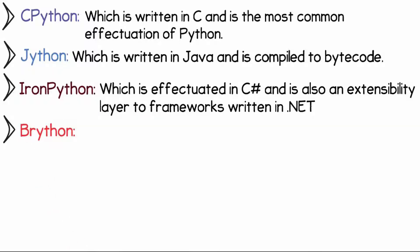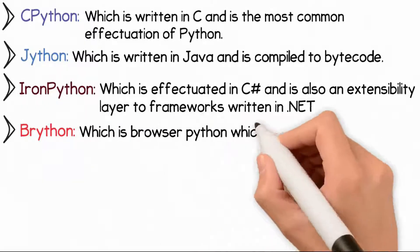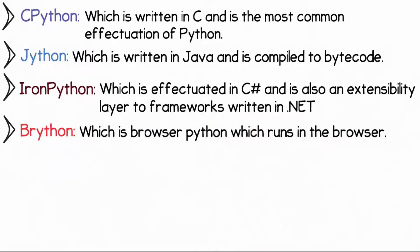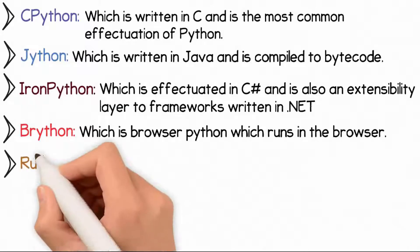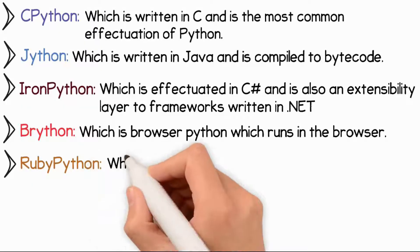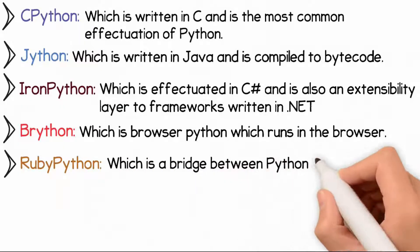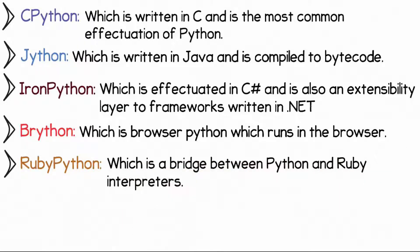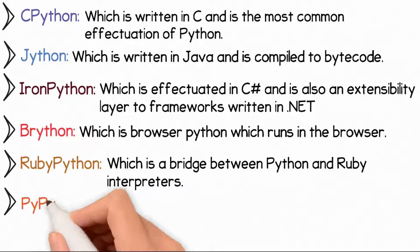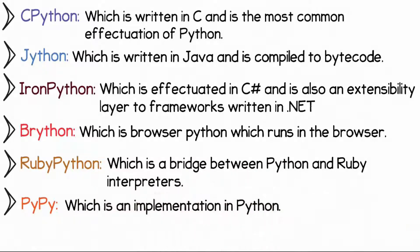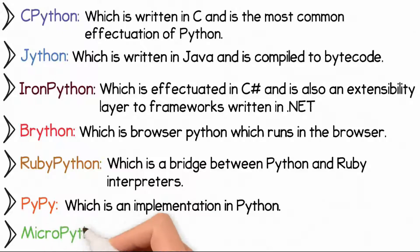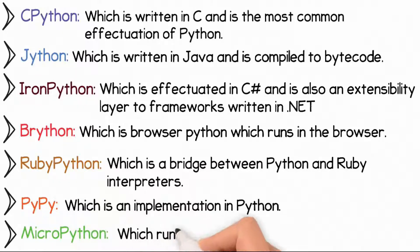Additional Python implementations include Brython, which is Browser Python and runs in the browser; RubyPython, which is a bridge between Python and Ruby interpreters; PyPy, which is an implementation in Python; and MicroPython, which runs on a microcontroller.